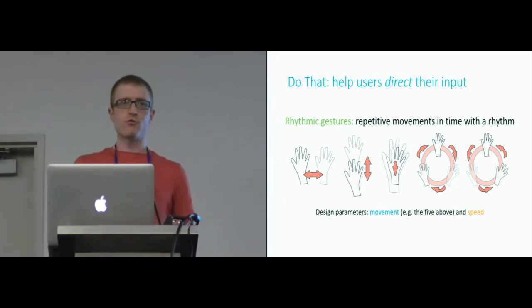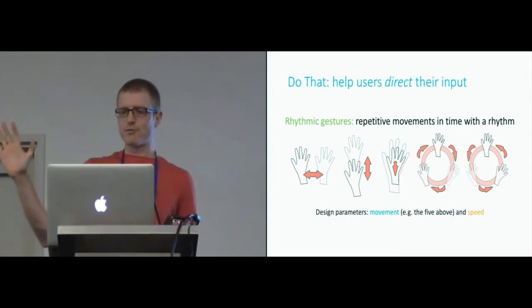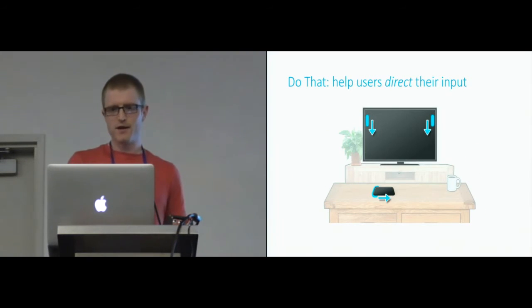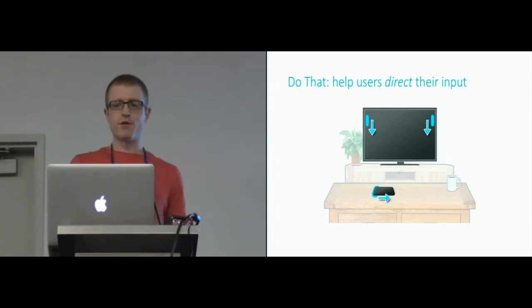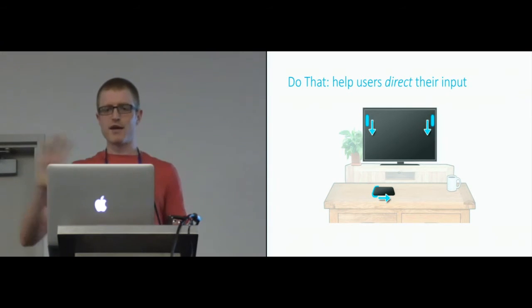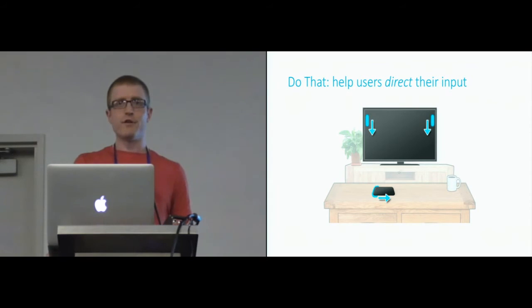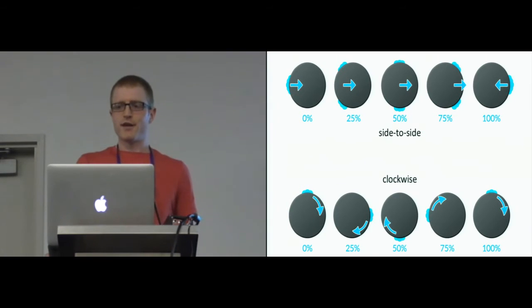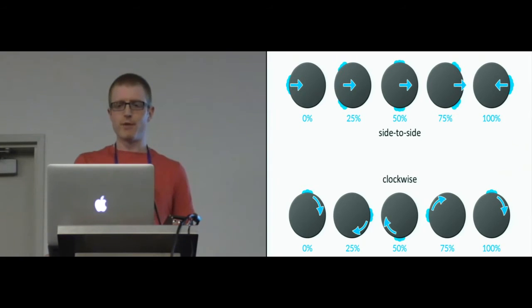We chose five hand movements: waving from side to side, moving up and down, forwards and backwards, and moving in a circular path. We also selected four speeds for those gestures, giving us a total of 20 gestures. By assigning different movements and speeds to different devices, users could direct their input towards one by performing the appropriate gesture. For example, to direct input towards the mobile phone, they'd move their hand from side to side in time with the animation as it moves across the table. These are examples of what animations might look like using a simple circular LED display — the movement of the light shows users the movement they need to make and the speed at which to replicate it.